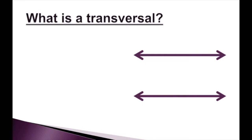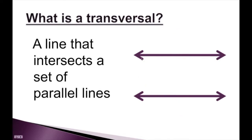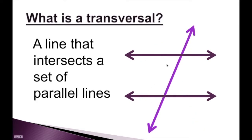So what is a transversal? A transversal is one of the most critical things when we're talking about parallel lines. The transversal is a line that intersects a set of parallel lines. The line that cuts right through them is the transversal. It doesn't have to go straight up — it can be slanted down or up towards the right. As long as you have a set of parallel lines and a line that cuts through them, that line is the transversal.